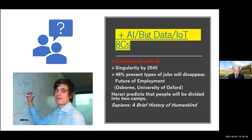As you know, Ray Kurzweil is a very famous scholar in the field of AI. He predicts AI is going to reach the singularity by 2045. And Osborne, the professor at Oxford, predicts that 48% of present types of jobs will disappear — these jobs will more or less be integrated into AI-related jobs. Also the famous historian Harari, who wrote Sapiens: A Brief History of Humankind, predicts people will be divided into two camps: one group will control AI by computer algorithm and be totally in charge, while the other will be used by AI — potentially a sort of slave of AI.